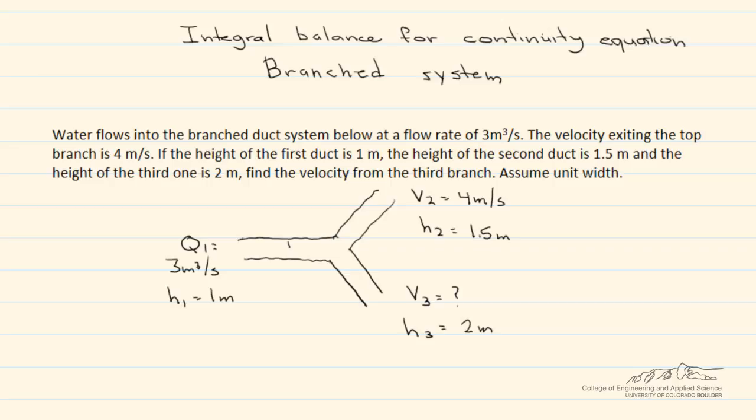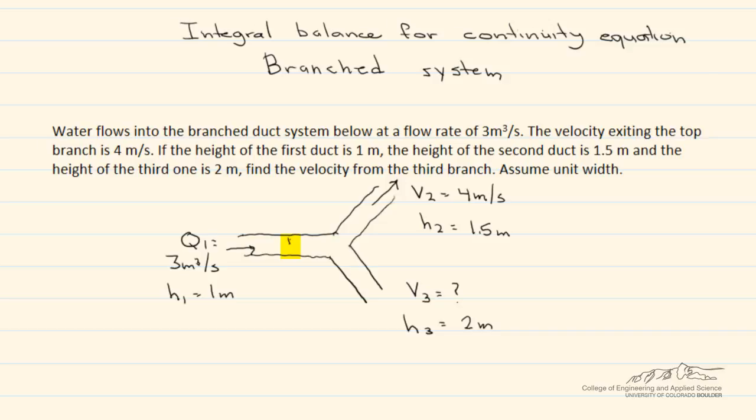We have Q1 coming in here. The velocity exiting the top branch is 4 meters per second. The height of the first duct h1 is 1 meter, the height of the second duct is 1.5 meters, and the height of the third one is 2 meters.